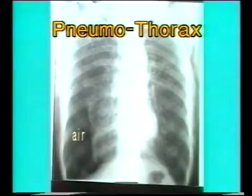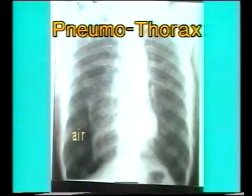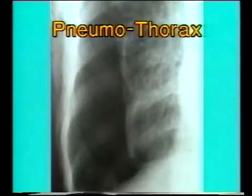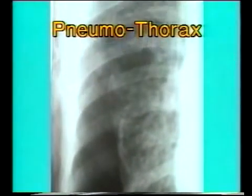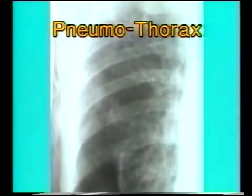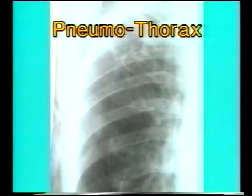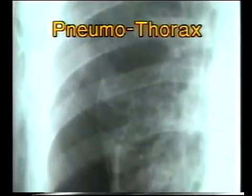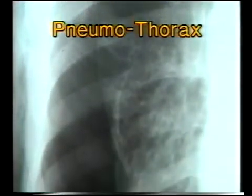This is another X-ray showing air in the right pleural cavity without significant shift of mediastinum. Note the peripheral radiolucent area on the right side and the thin line of lung border representing the visceral pleura which demarcates the collapsed lung from the air. Note the absence of lung markings in the dark radiolucent area.